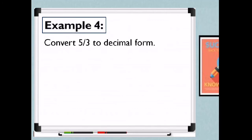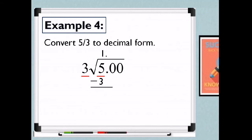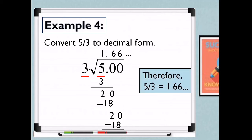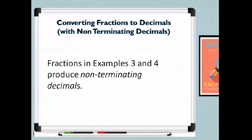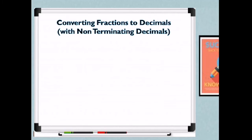For Example 4, convert 5/3 to decimal form. Three is our divisor and five is our dividend. 5 divides 3 is 1. Multiply: 1 times 3 is 3. Subtract: 5 minus 3 is 2. Add two zeros after the decimal point and bring down 0, giving 20. 20 divides 3 is 6. Multiply: 6 times 3 is 18. Subtract: remainder is 2. Bring down 0 — 20 divides 3 is 6 again, giving remainder. Therefore, 5/3 equals 1.66... Examples 3 and 4 are non-terminating decimals.